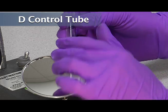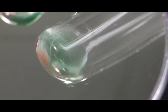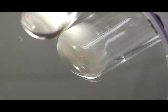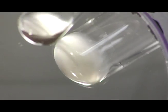And then read the D control tube in the AHG phase. And see the cells streaming off nice and smoothly. A nice negative reaction as well.